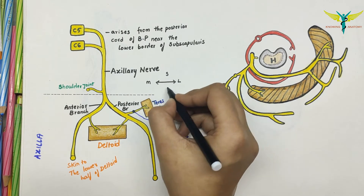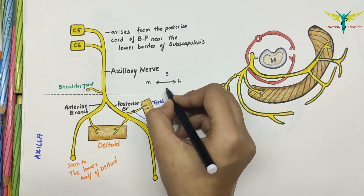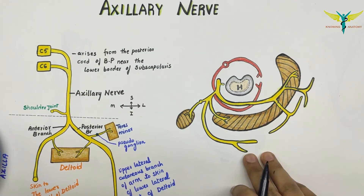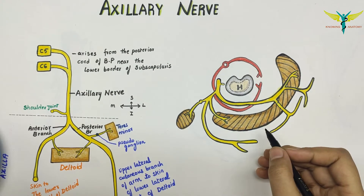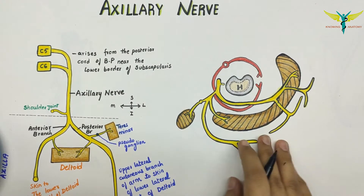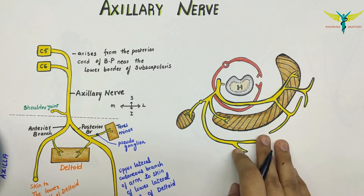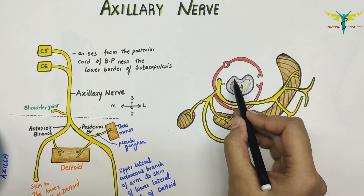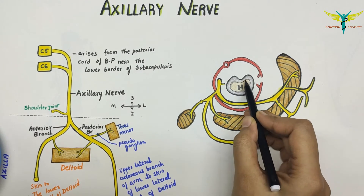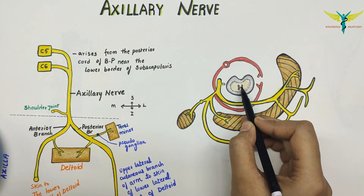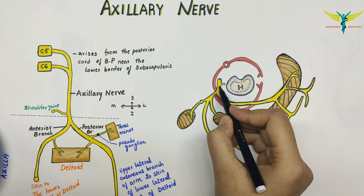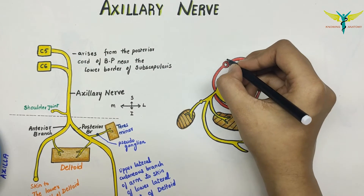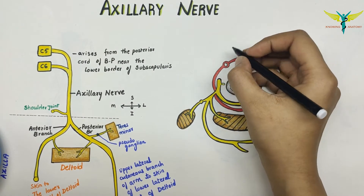Now let's learn about the axillary nerve in the horizontal section at the deltoid region. This is the surgical neck of the humerus, and this is the axillary nerve. This is the axillary artery.